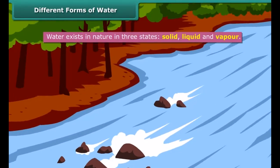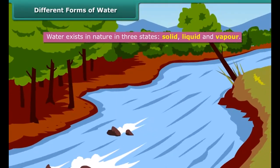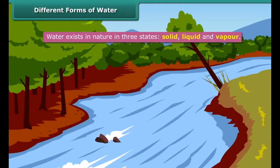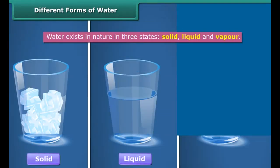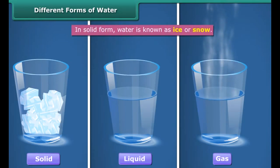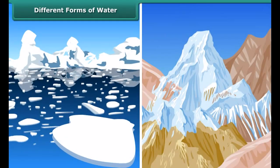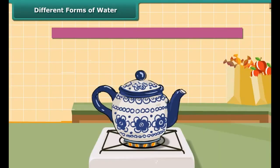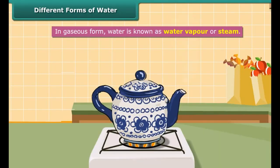Water exists in nature in three states: solid, liquid, and gas. In solid form, water is known as ice or snow. It is found at the poles as ice caps and in glaciers, and in mountains as snow. In gaseous form, water is known as water vapor or steam.